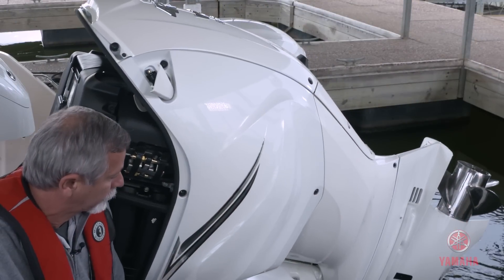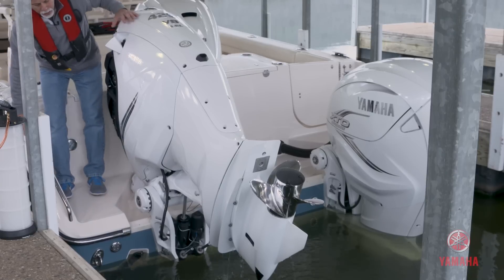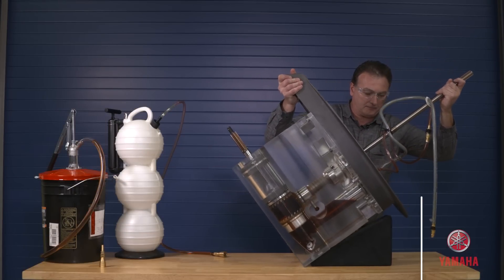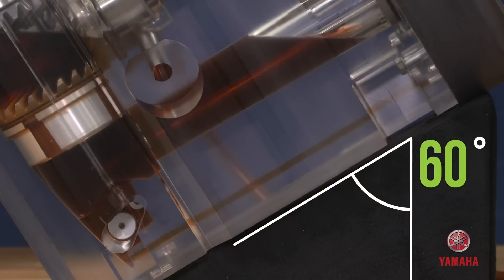The first step is to tilt the engine completely out of the water. The lower unit must be tilted at least 60 degrees out from the transom for the system to function properly.